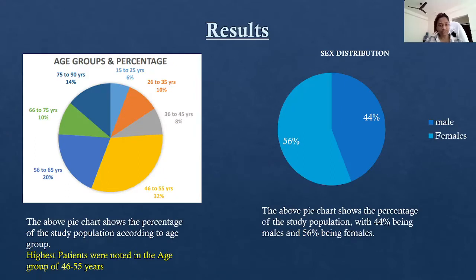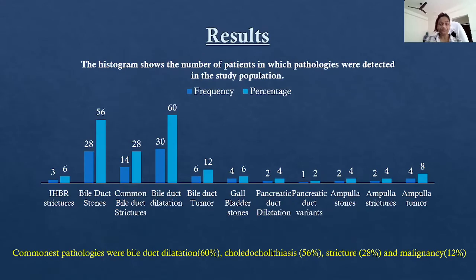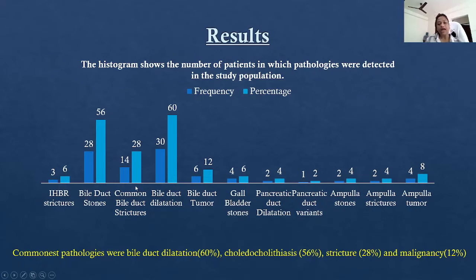Coming to the results: the pie chart shows the percentage of the population according to age group, and the highest number of patients were noted in the age group of 46 to 55 years. In sex distribution, females were more predominantly the patients with biliary obstruction. The histogram shows pathologies detected in our study population — the commonest were bile duct dilatation, choledocholithiasis at 56%, strictures, and malignancies.